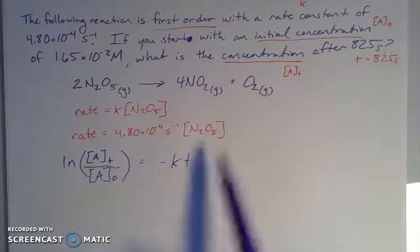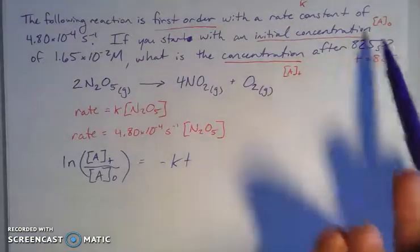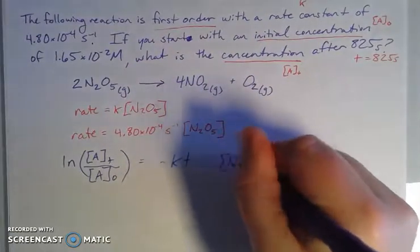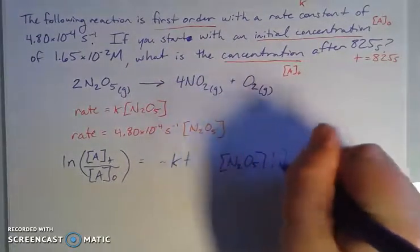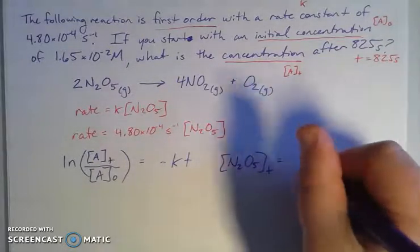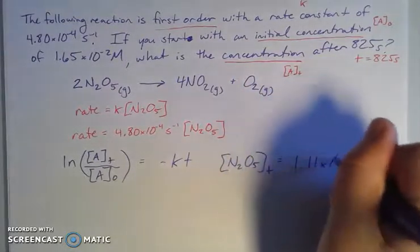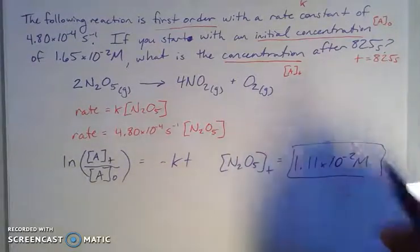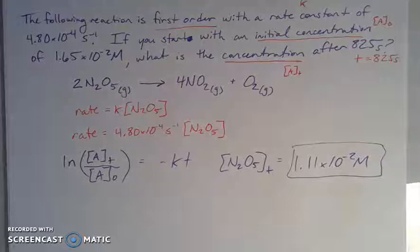You're given your K, you're given your A naught, you're given your T. When you rearrange and plug and chug for this, you end up with [N2O5] at time T equals 1.11×10^-2 molarity.